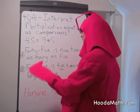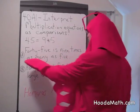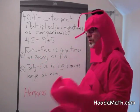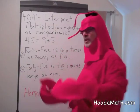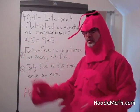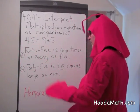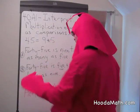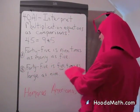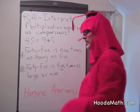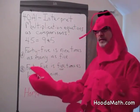That means 45 is 9 times as many as 5, or 45 is 9 times larger than 45. Or you could think of it as 45 is 5 times as large as 9. Or if you had 45 objects, that would be 5 times as many as 9 objects.